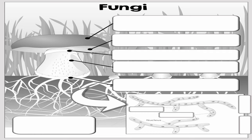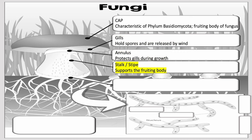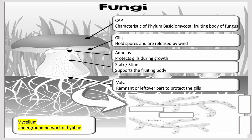Now let's zoom in on the mushroom, a familiar fungal fruiting body known as the cap. The cap is a characteristic of Phylum Basidiomycota and is also the fruiting body of the fungus. The cap bears spores on its underside in structures called gills. The annulus protects the gills during growth. The stalk or stipe supports the fruiting body. The volva is a remnant or leftover part to protect the gills. Mycelium is the underground network of hyphae — the true body of the fungus, a vast network that could cover acres and even miles of area and can live for thousands of years.